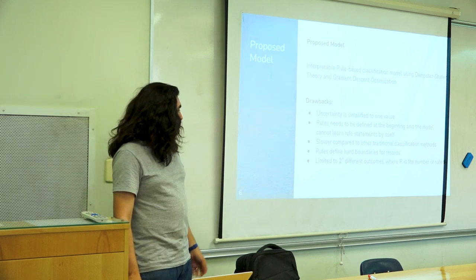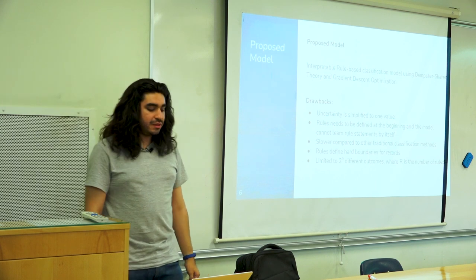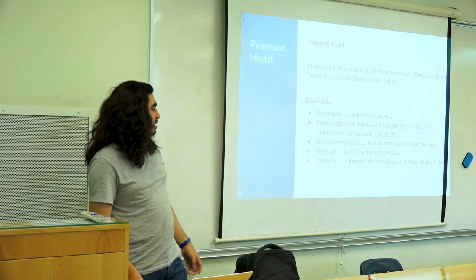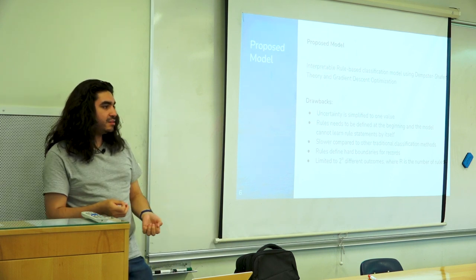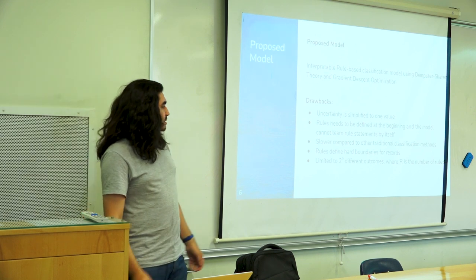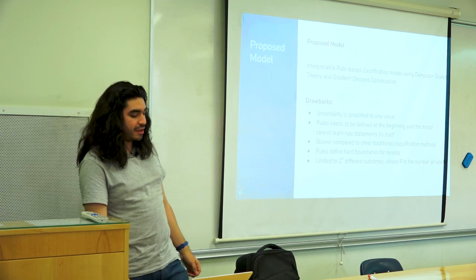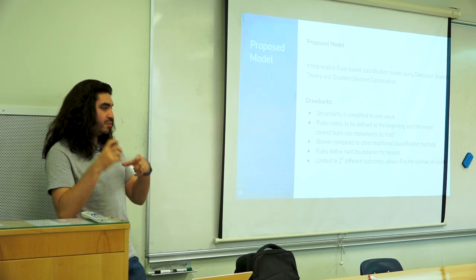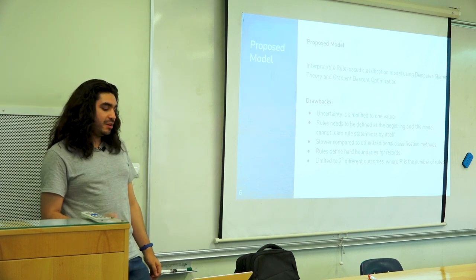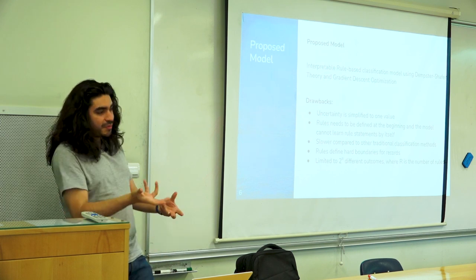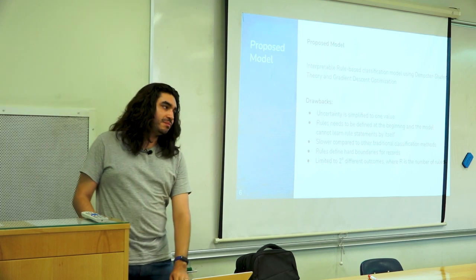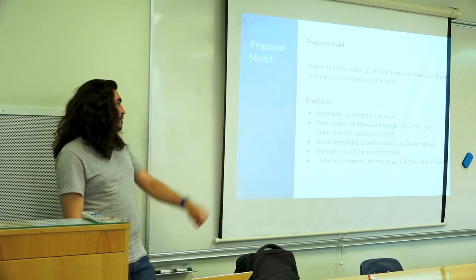The second drawback, and one of the most important ones, is that rules are defined at the beginning of the model before training, and the model itself doesn't learn the rules. It adjusts the values of the rules and decides which rules are important, but the model cannot produce rules. You have to set up the rules in the beginning, and this is a huge limitation because you are constrained to what you put in the rules. We need to improve this to make a fully automatic model.